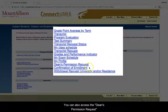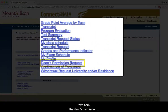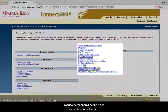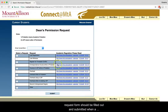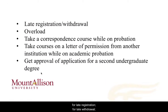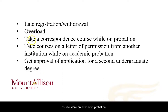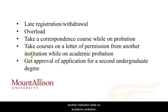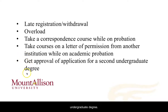You can also access the Dean's Permission Request form here. The Dean's Permission Request form should be filled out and submitted when a student seeks permission for late registration, for late withdrawal, to overload, to take a correspondence course while on academic probation, to take a course or courses on a letter of permission from another institution while on academic probation, or to get approval of application for a second undergraduate degree.